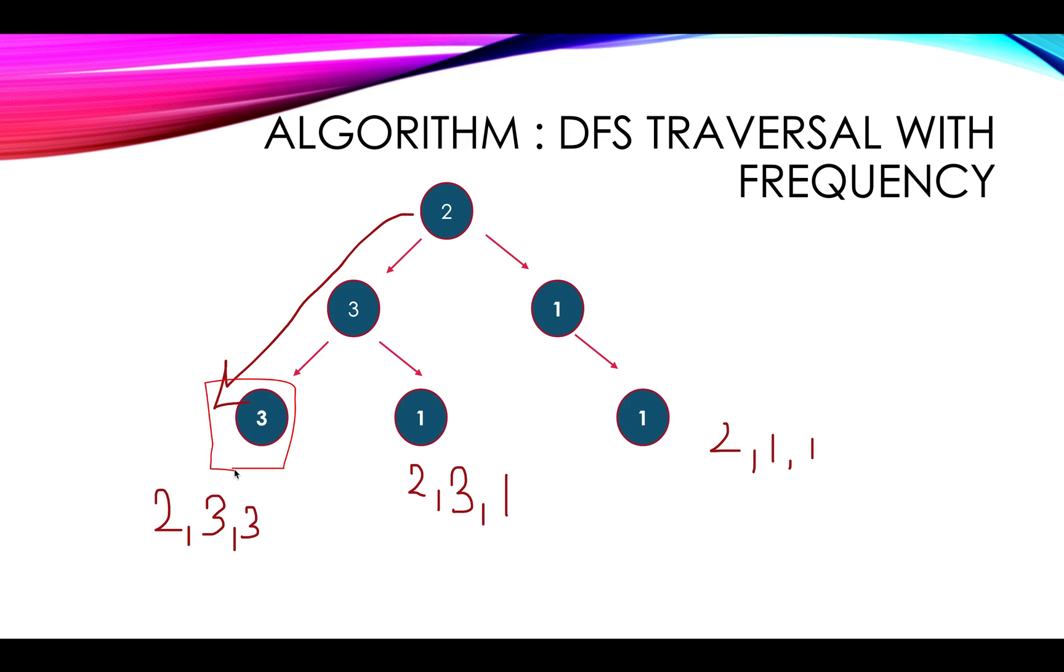As soon as we reach the leaf node, we will check whether the frequencies of all the numbers can generate a palindromic string or not. If it can generate, we will add it to our result set. If it cannot generate, we will ignore this case.